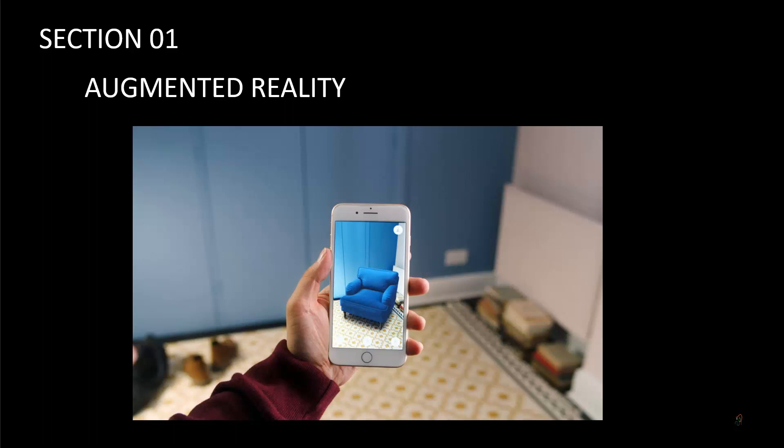For example, if you have a room and you want to know how it will look when you place a sofa, you take the 3D model of the sofa, and when you hold that image in your phone with this app, you can place the sofa virtually and check how it will actually look. This is an example of augmented reality.